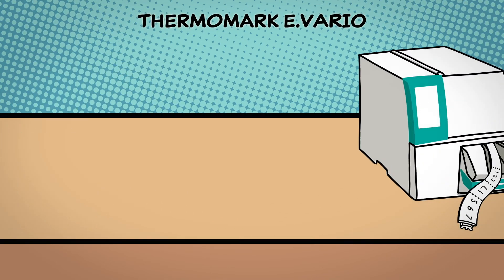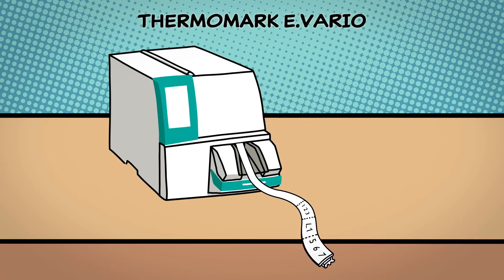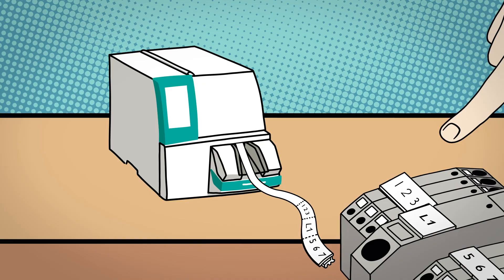The Thermomark E-Vario marks entire terminal strips with just two materials in continuous format for tall and flat marking grooves.